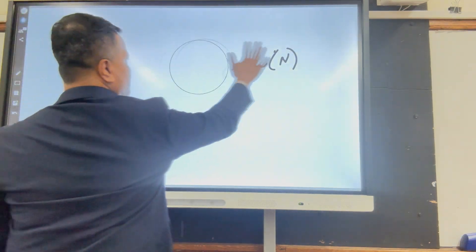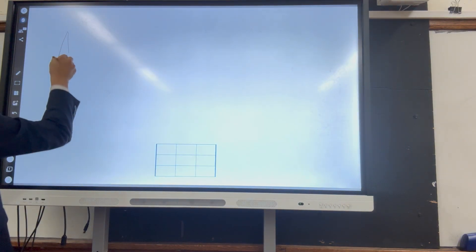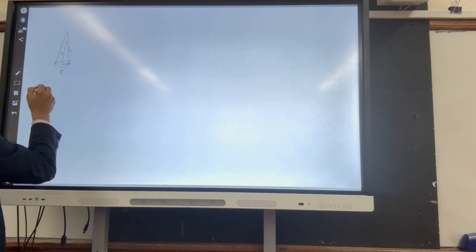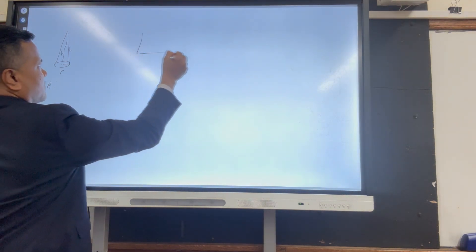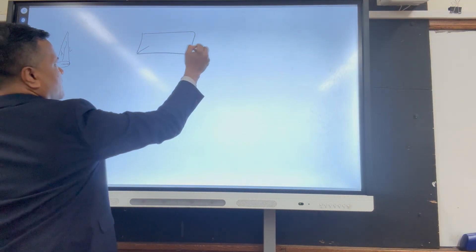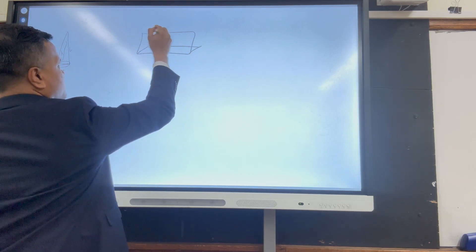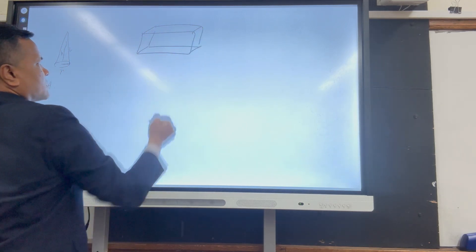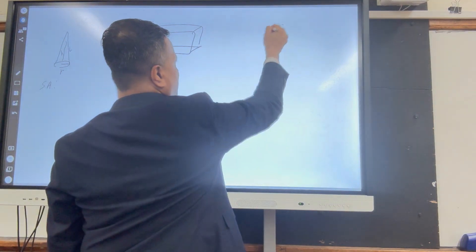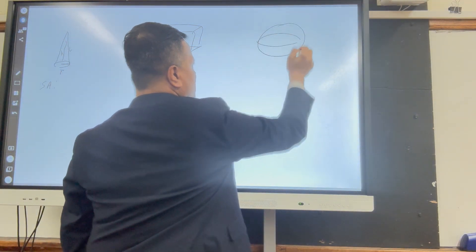Let's dive in and start with a few shapes. I have three different objects: a cone, a rectangular prism, and a sphere. The cone has a radius, height, and length — so its surface area is something to figure out. The rectangular prism also has a surface area to find, and the sphere has its own surface area as well.